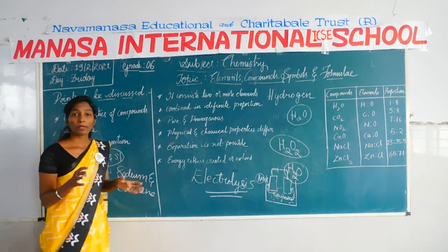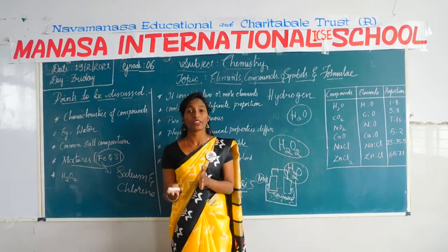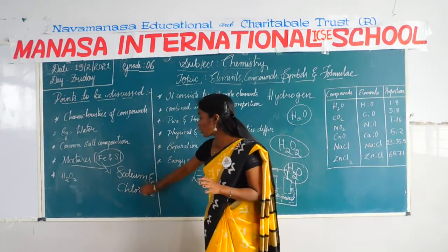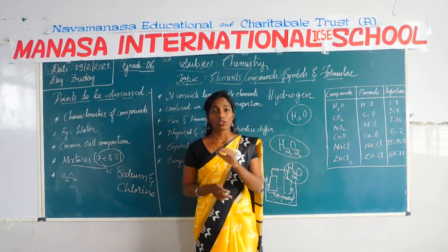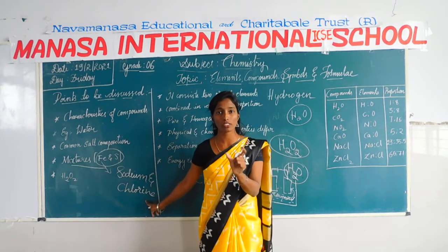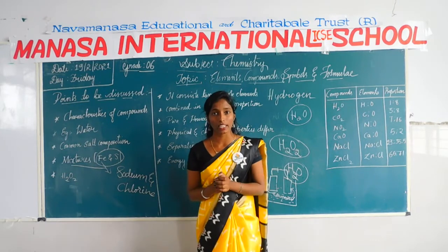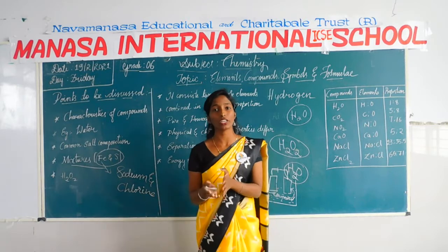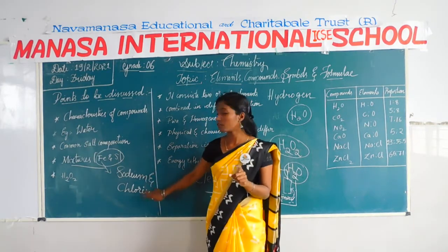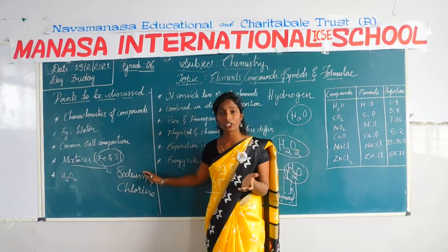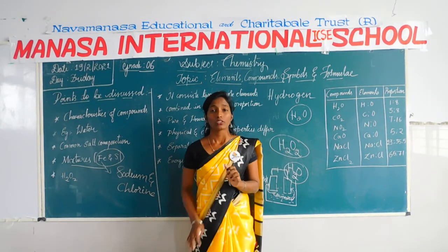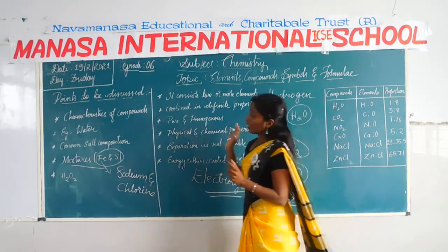Sodium is a very fast reactive metal — it is preserved in kerosene because if it comes into contact with air or water it reacts strongly. Chlorine is a greenish gas which is very poisonous and is highly reactive. But when these two compose together, they form our common salt — sodium chloride — which we use daily in our food for taste and nutrition. Sodium chloride is composed of sodium and chlorine, and it becomes a colourless, odourless, tasty solid. That is what a compound composition is.